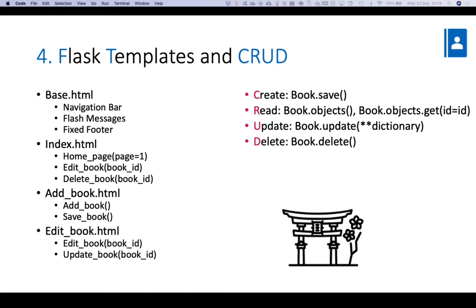We're going to create a number of templates for the front end. We have base.html which has a navigation bar, flash messages, and a fixed footer. Then we have index.html as the main page, and add book and edit book as well. Each of these is linked to a number of functions or endpoints within app.py, which we will go through in greater detail later.